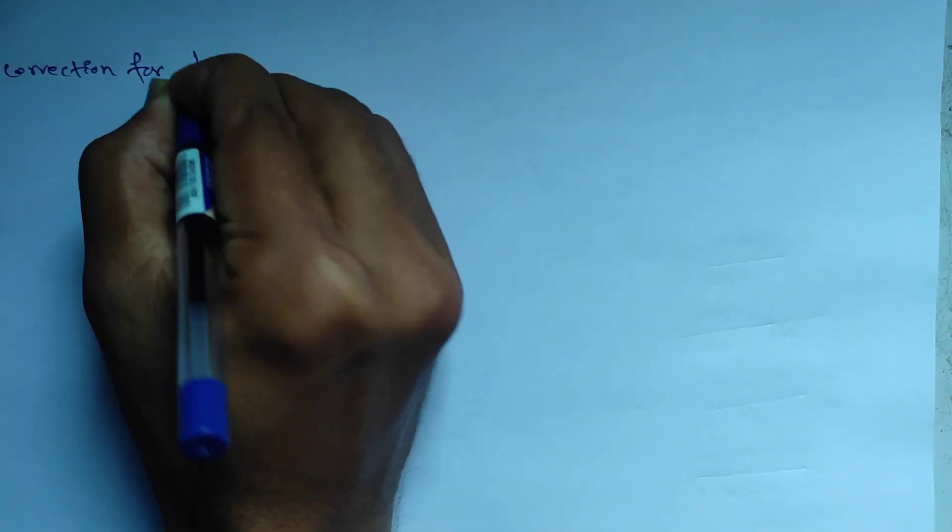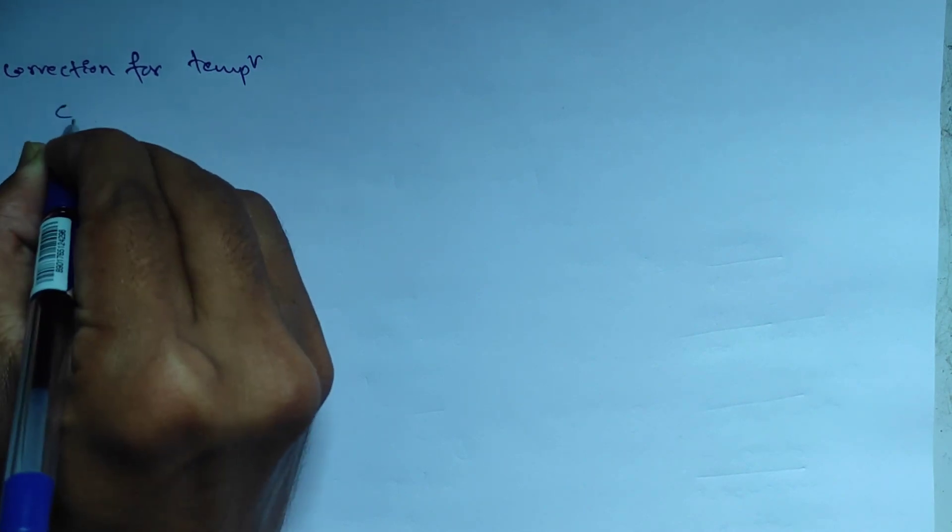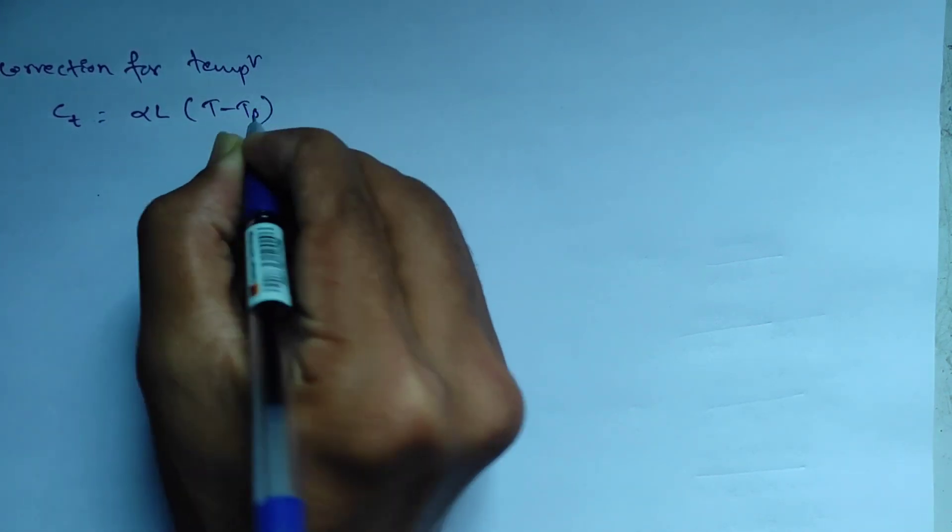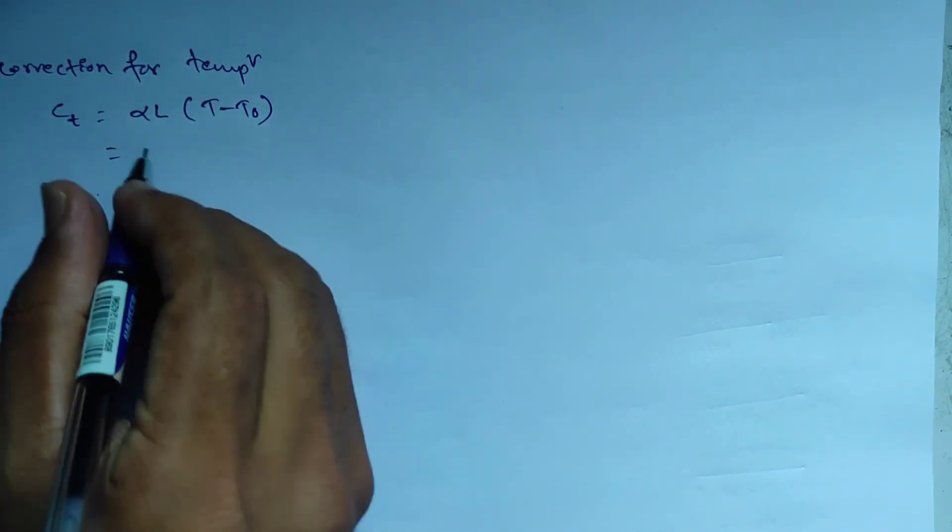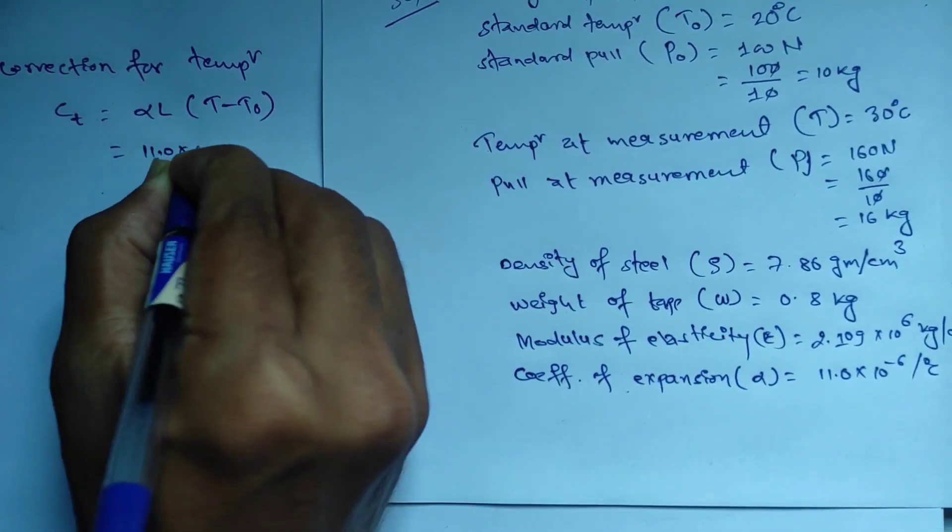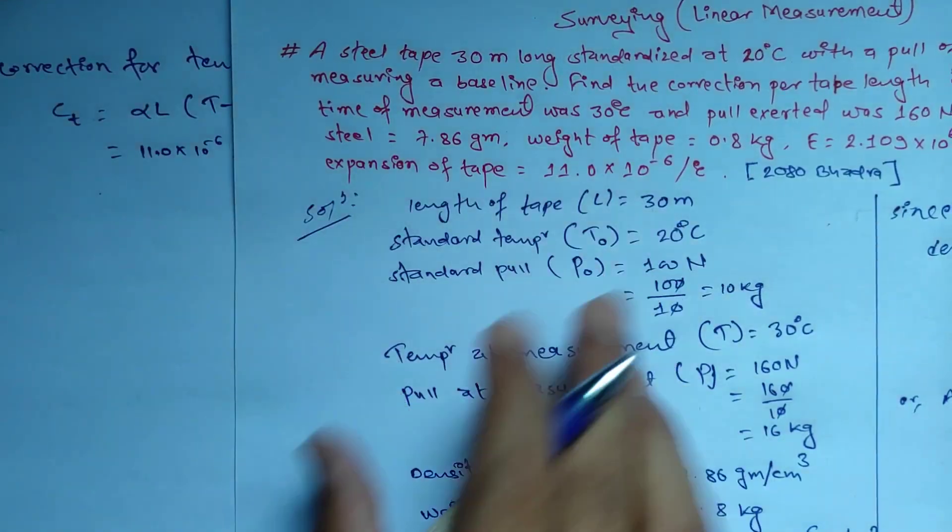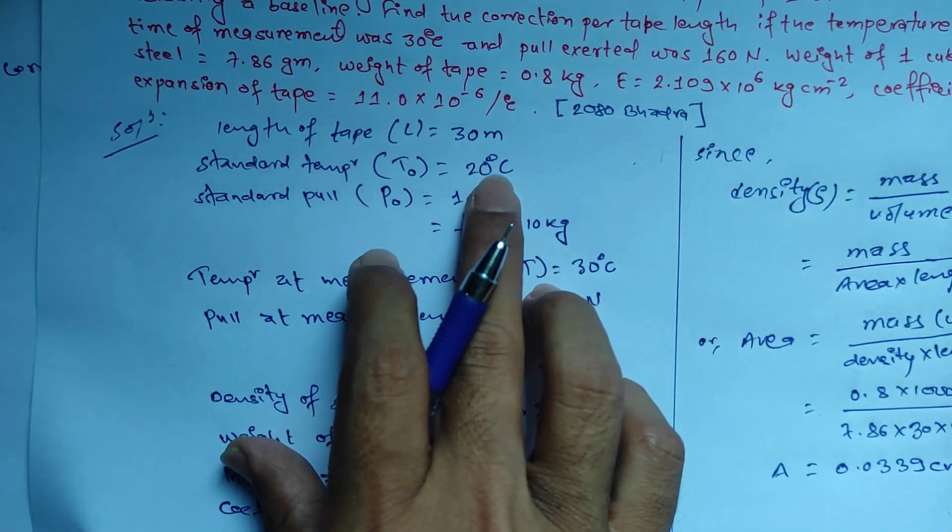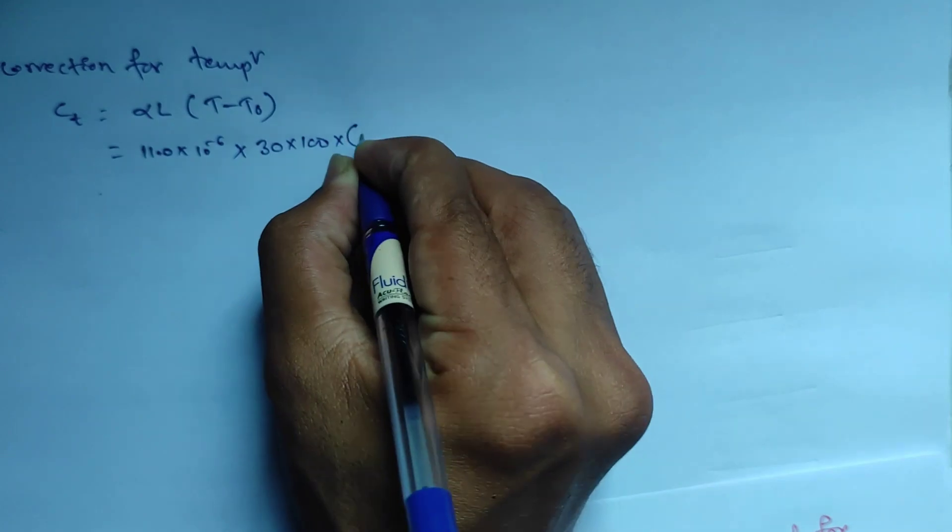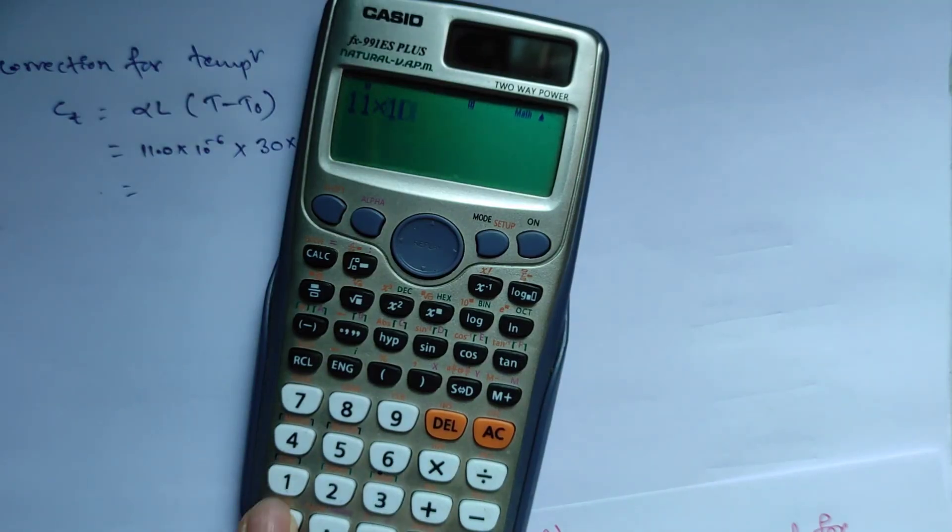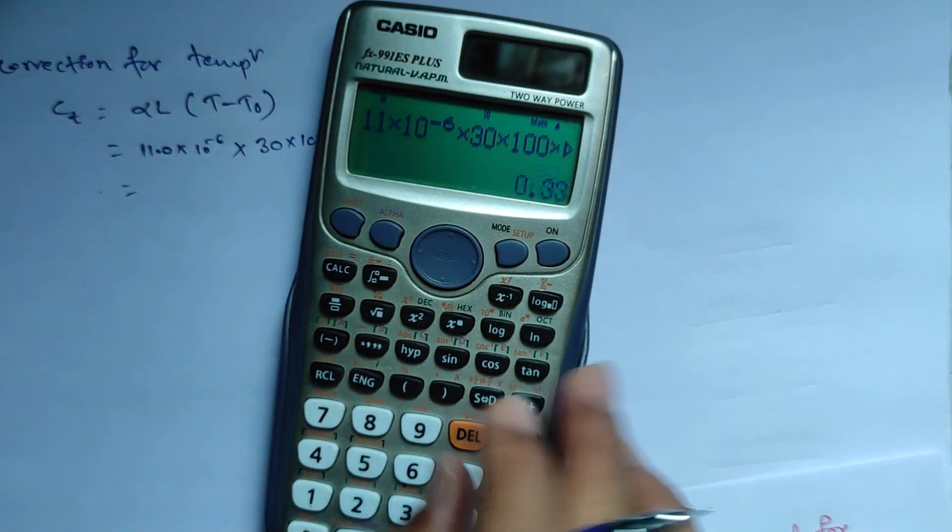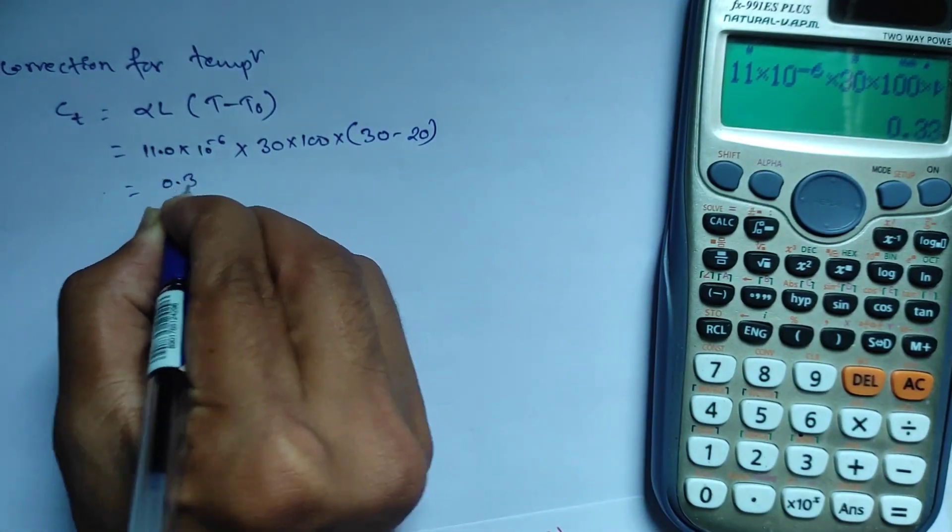Correction for temperature: Ct equals alpha L times T minus T naught. Ct equals 11.0 into 10 to the power minus 6 into 30 into 100 into (30 minus 20), which equals 0.33 cm.